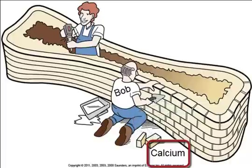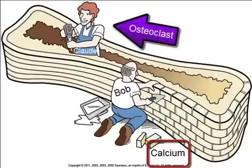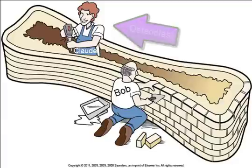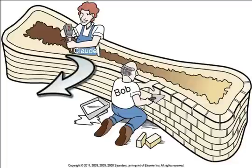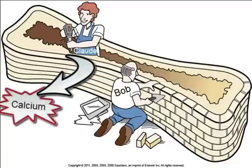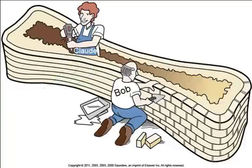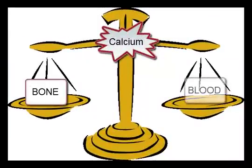The guy on the inside is Claude the Carver — he is an osteoclast. Claude is carving away the interior of the bone, and as he's carving away, if you can imagine little chips of bone coming out — this is all on a cellular level — what he's freeing up and releasing is calcium, and that calcium goes back into the bloodstream. So Bob and Claude work together to maintain the balance of calcium in the bone and calcium in the blood.